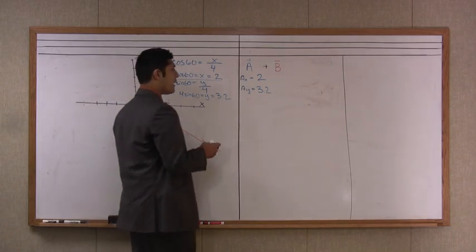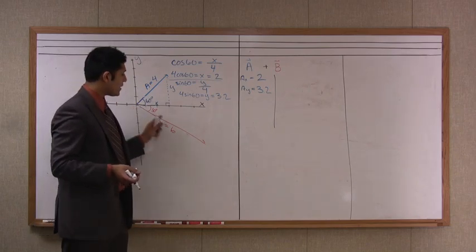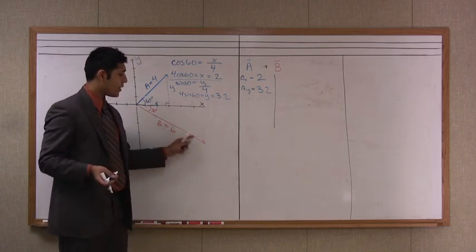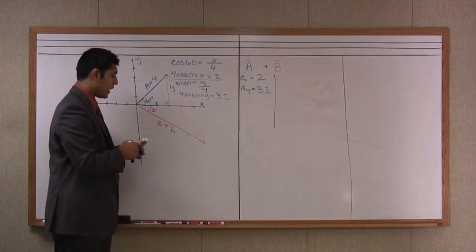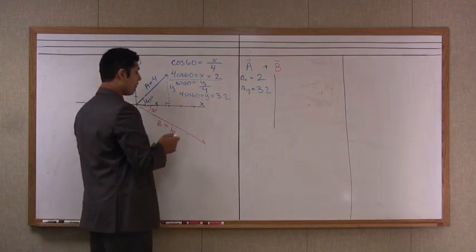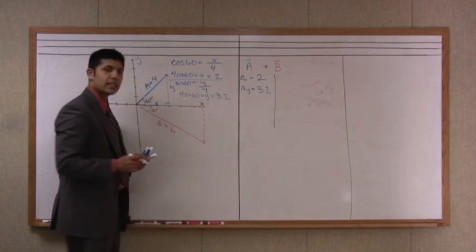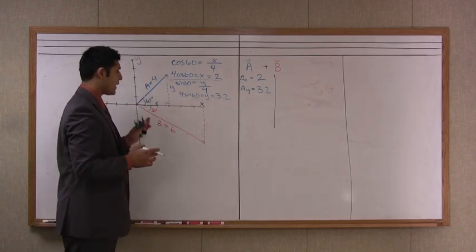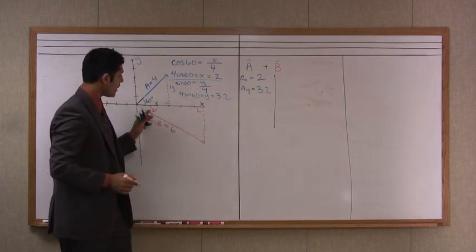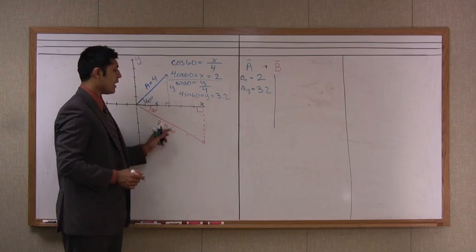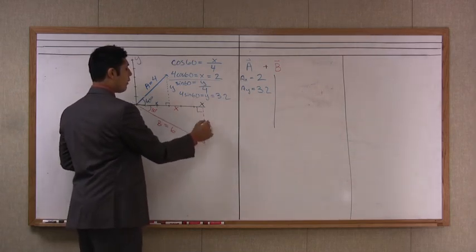Now that we've done that, let's find the values for B. B is again in the negative quadrant or at least in the negative y direction. And so again, let's use a similar technique we did and draw a dotted line from the end of B to my x axis or my horizontal axis. And again, what I've done is I've created a right triangle here. And I know the hypotenuse is 6 and I'm again trying to find out what x is equal to and what y is equal to.